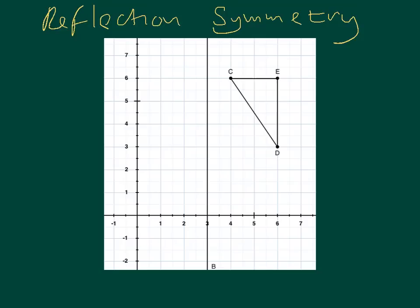I'm going to show you how to reflect the triangle CED. Here's my triangle C to E to D and back to C, through this line here. The line's called x equals 3, but that doesn't matter too much. We've just been asked to reflect it through the symmetry line.